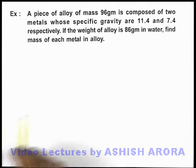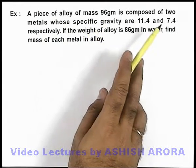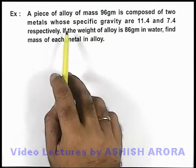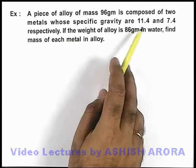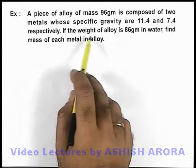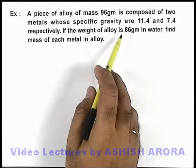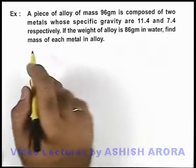In this example, we are given that a piece of alloy of mass 96 grams is composed of two metals. The specific gravities are 11.4 and 7.4 respectively. If the weight of the alloy is 86 grams in water, we are required to find the mass of each metal in the alloy.